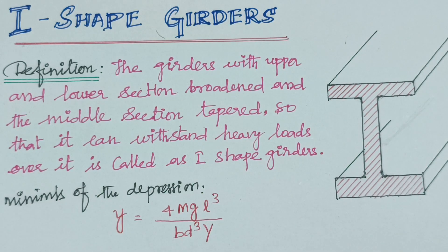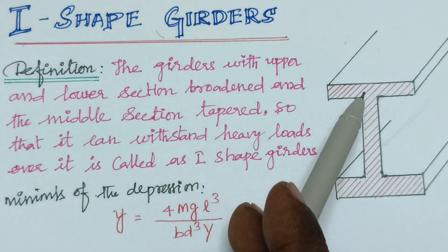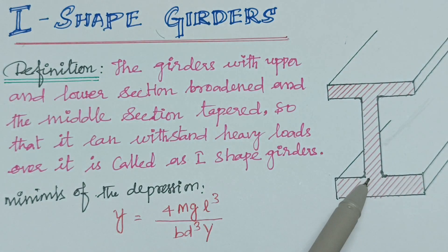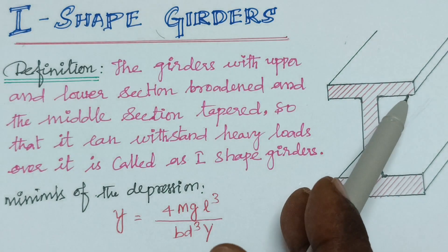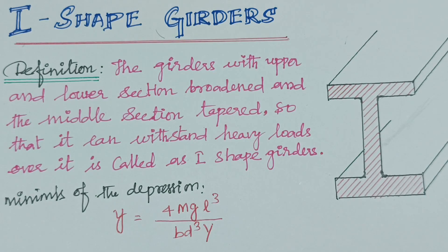I-shaped girders are also used in river bridges. The design reduces material usage since the top and bottom are broader while the middle is thin, removing unnecessary rectangular material. These are the applications of the I-Shape Girder. Thank you.